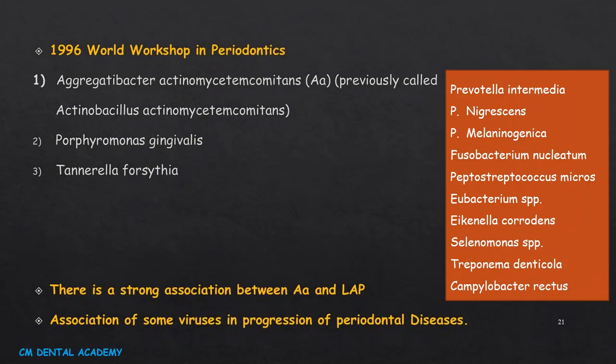In 1996, the World Workshop in Periodontics reported that Aggregatibacter actinomycetemcomitans, Porphyromonas gingivalis, and Tannerella forsythia are the most commonly associated bacteria with periodontitis. Other bacteria documented to be associated include Prevotella intermedia, Prevotella nigrescens, Prevotella melaninogenica, Fusobacterium nucleatum, Peptostreptococcus micros, Eubacterium species, Eikenella corrodens, Selenomonas species, Treponema denticola, and Campylobacter rectus. There is a strong association between Aggregatibacter actinomycetemcomitans and localized aggressive periodontitis. Association of some viruses in progression of periodontal disease has also been proven.